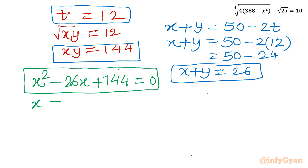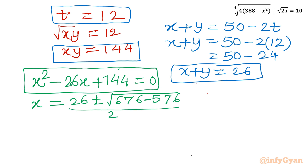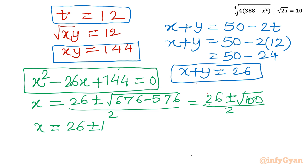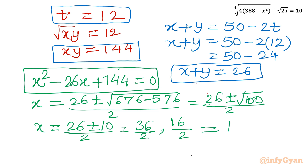Applying the quadratic formula: x = (26 ± √(676 − 576)) / 2 = (26 ± √100) / 2 = (26 ± 10) / 2. With the plus sign: 36/2 = 18. With the minus sign: 16/2 = 8. So we have two values: x = 18 and x = 8.